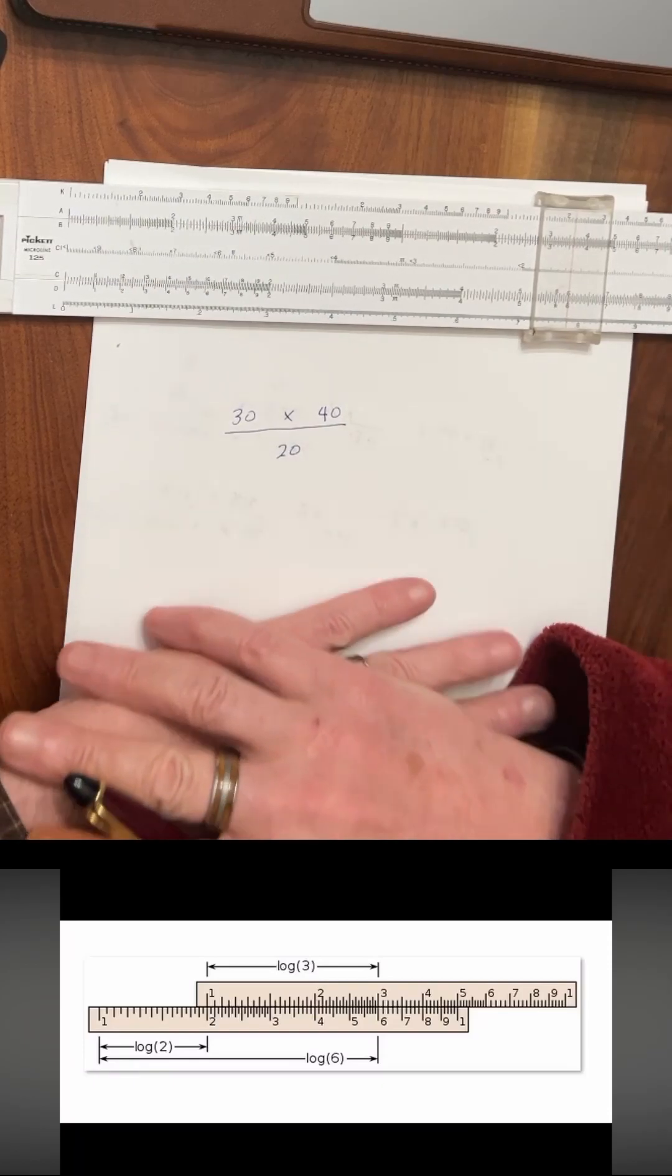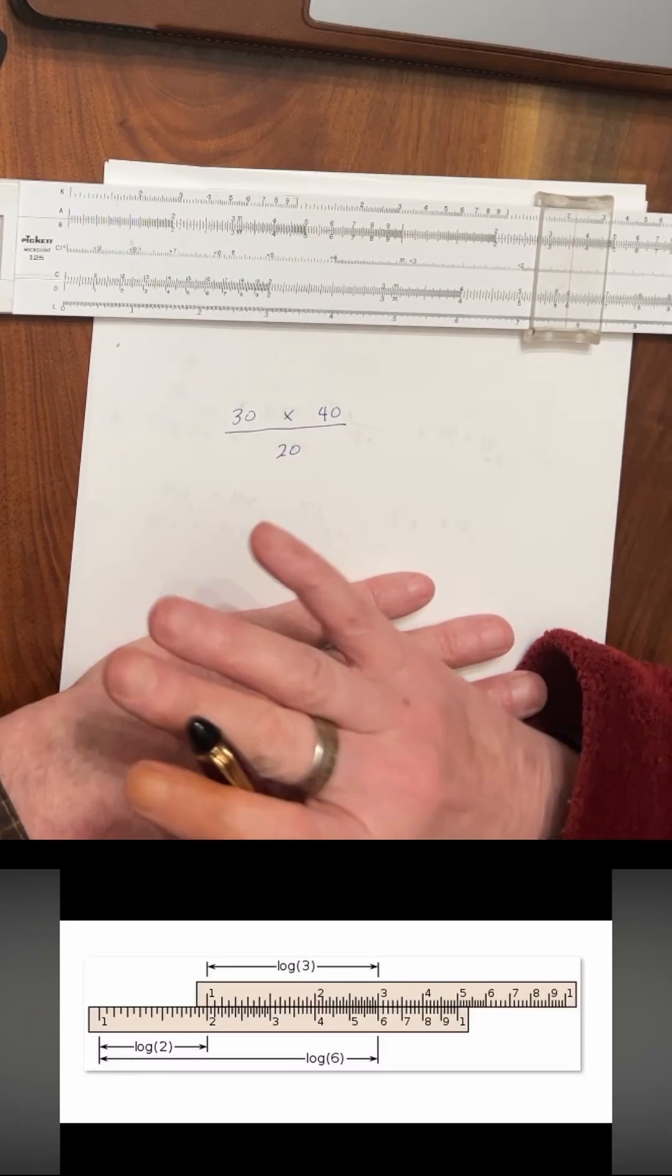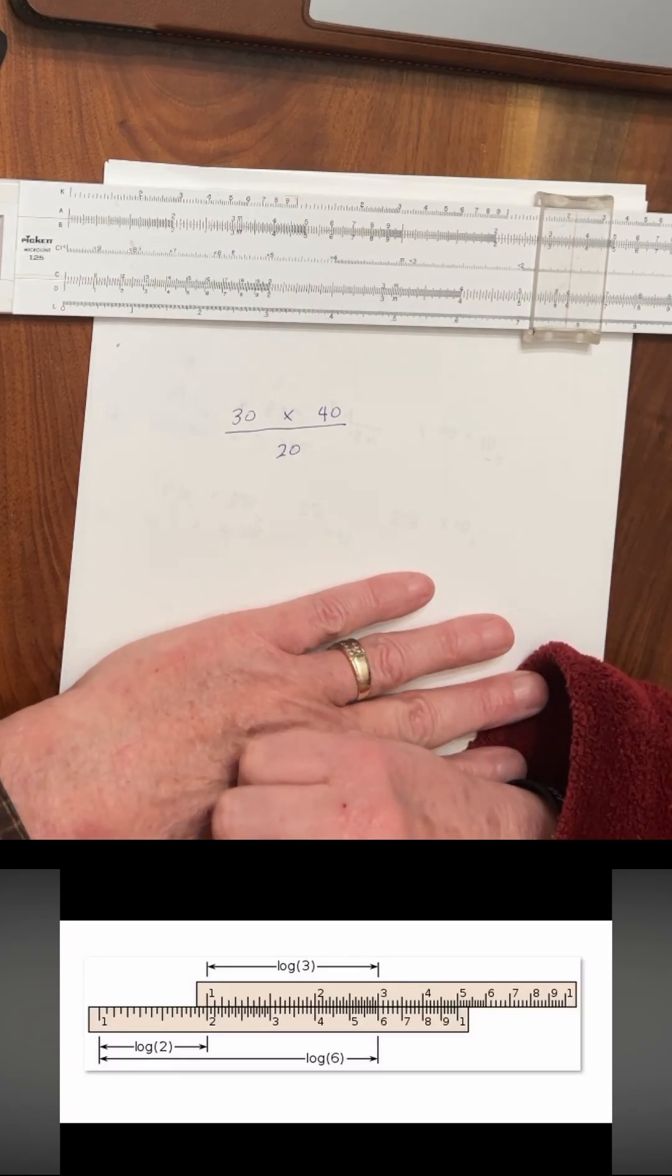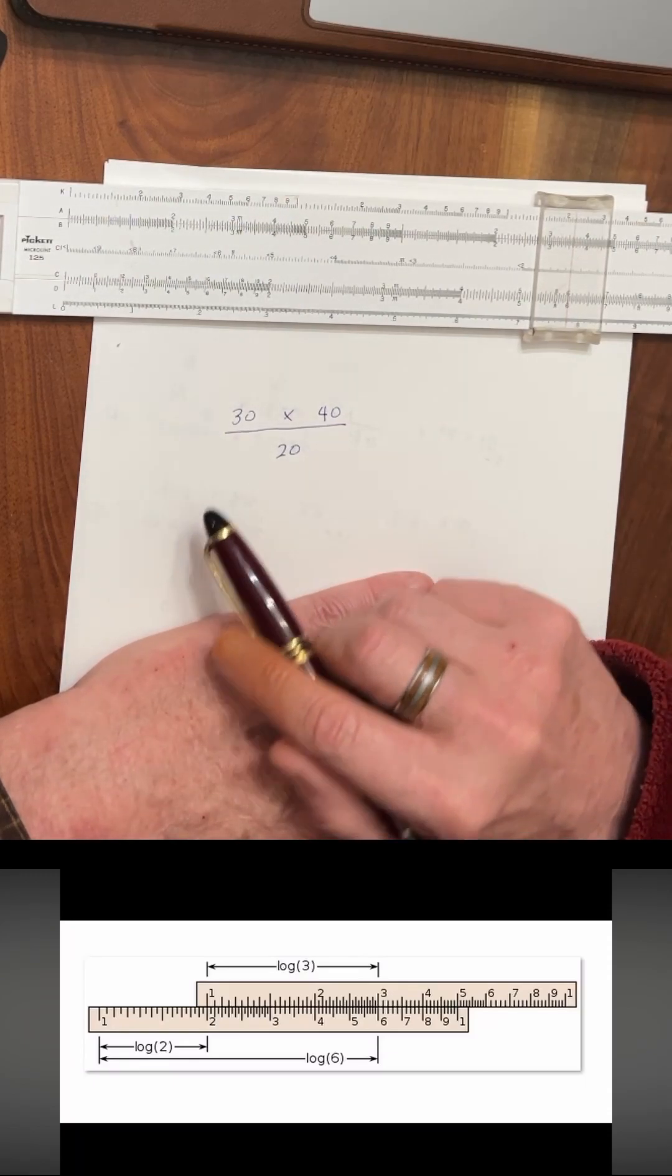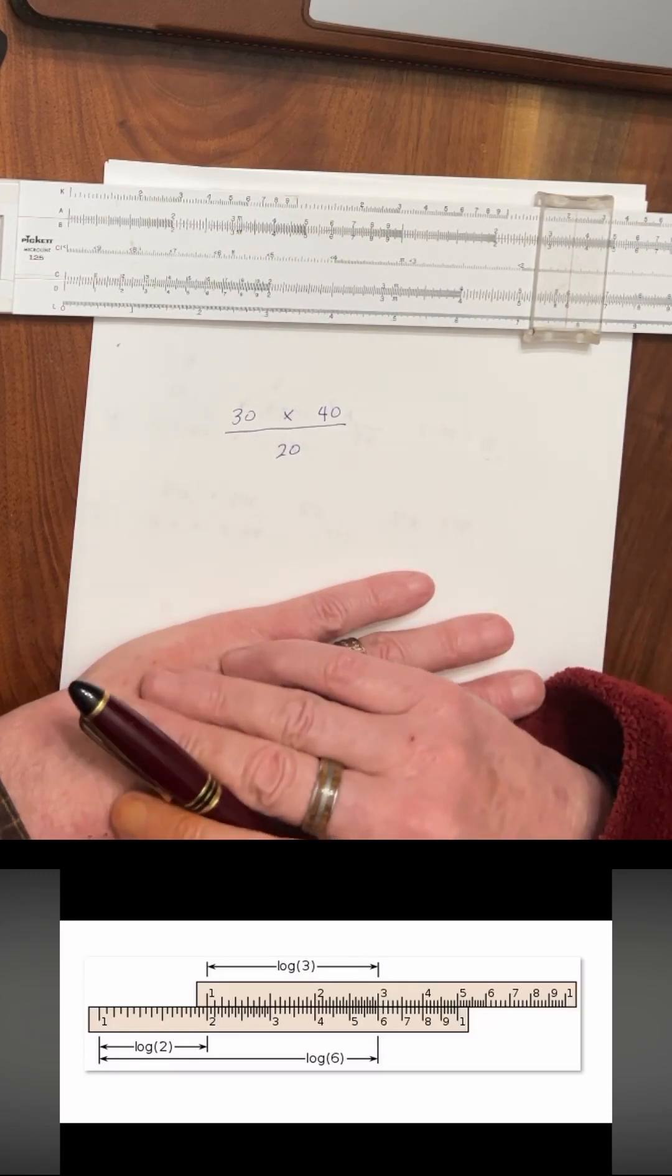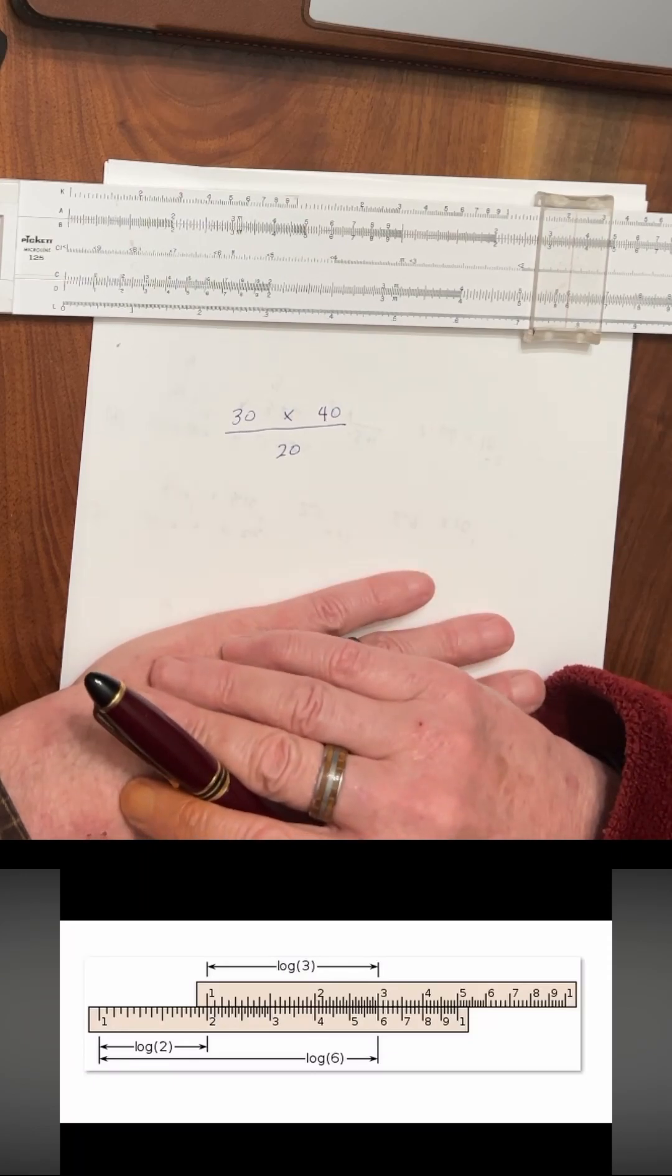Now before we go on to the next section of the test, I want to talk about the order of operations with the slide rule. So let's say we have 30 times 40 divided by 20. How do we approach this on the slide rule?